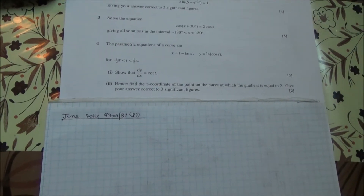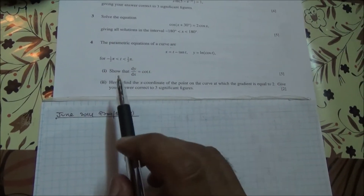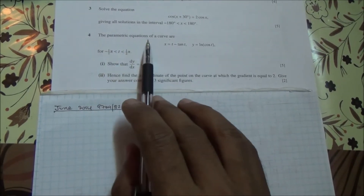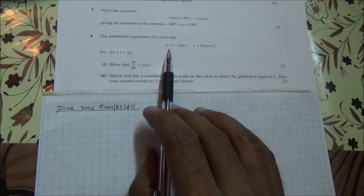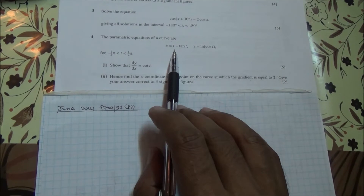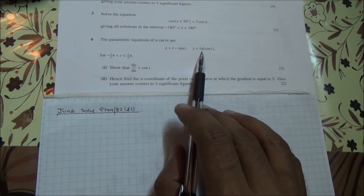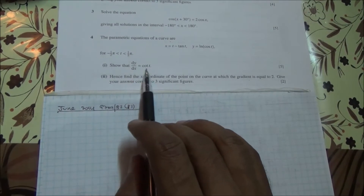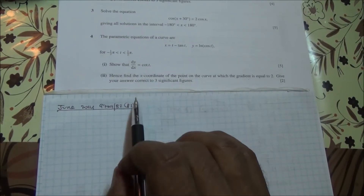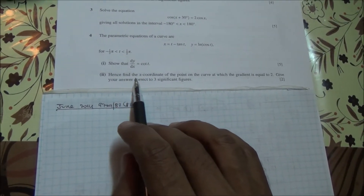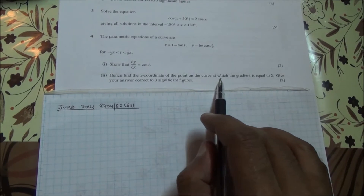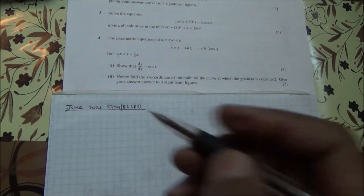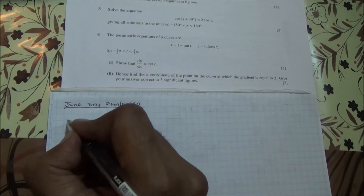Question number 4, taken from June 2014, LL Matz, HSC P3. The parametric equations of the curve are given as x equals t minus tan(t) and y equals ln(cos(t)) for these values. We need to show that dy/dx is equal to cot(t), and hence find the x-coordinate of the point on the curve at which the gradient is equal to 2, giving the answer correct to three significant figures.